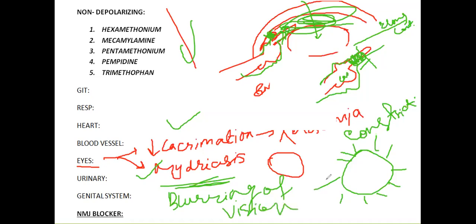Additionally, because of these radial muscles, these drugs will paralyze the radial muscles for a certain time, so the patient will have cycloplegia. So all the actions of these drugs on the eye: if you remember the cholinergic agonist drug concepts and apply them to the antagonist ones, you will see all the actions are now opposite - the concept is the same.